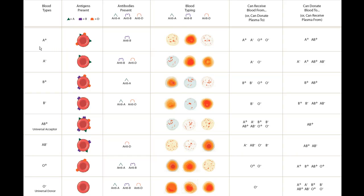There are three main antigens present — things that the immune system can target. Technically there are more than 30 antigens, but the A antigen (depicted as a green triangle), the B antigen, and the D antigen — also known as the positive/negative designation — are the main three that cause a vigorous immune response. These are the ones that must be considered when donating or transfusing blood. There are eight main blood types depending on the presence or absence of these antigens.